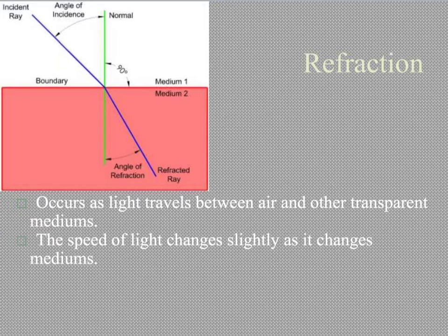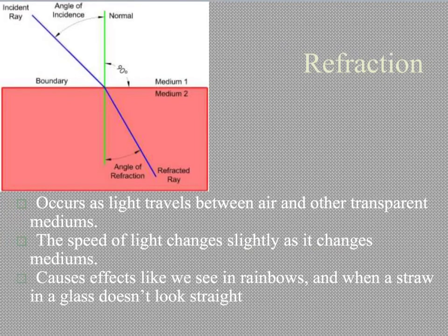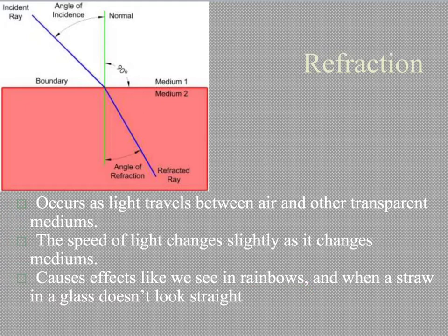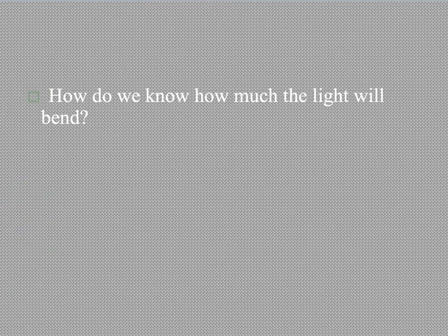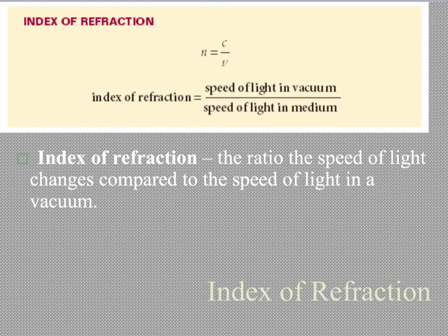As we mentioned before in the previous chapter, the speed of light will change slightly as it changes medium, and this causes the effects like we see in rainbows and when a straw in a glass doesn't look straight. So how can we figure out how much the light will bend as it goes into a different medium? What we use is something called the index of refraction.